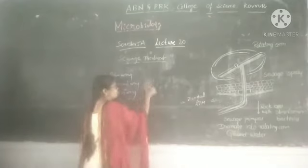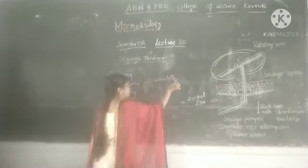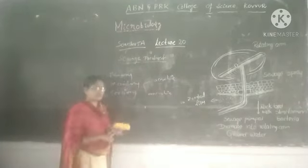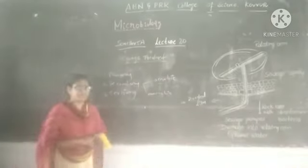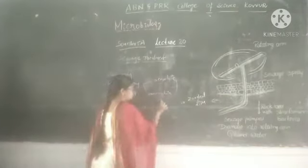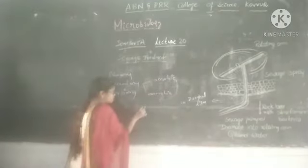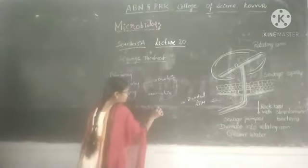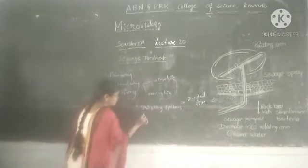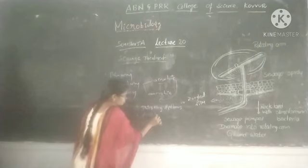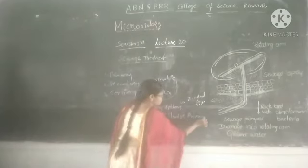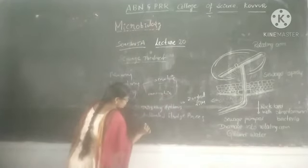In the secondary method, aerobic means presence of oxygen, while anaerobic means presence of CO2 and absence of oxygen. Aerobic treatment has three methods: trickling filters, activated sludge process, and oxidation ponds.